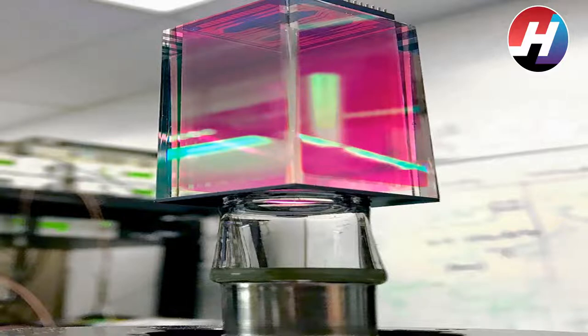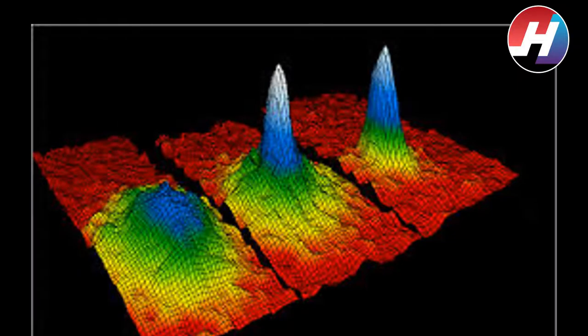This state of matter is the Bose-Einstein condensate, sometimes called the fifth state of matter. These are gaseous cold atoms that stop behaving like individual atoms and start to behave like a collective. BECs, Bose-Einstein condensates as they are called, were first predicted by Albert Einstein and Satyendra Nath Bose over 95 years ago, but they were first observed in the lab just 25 years ago.